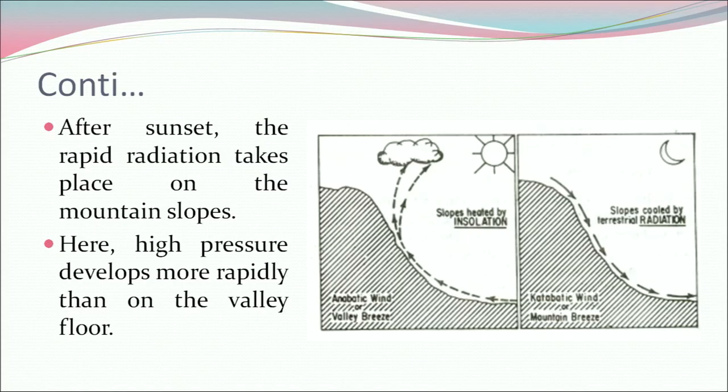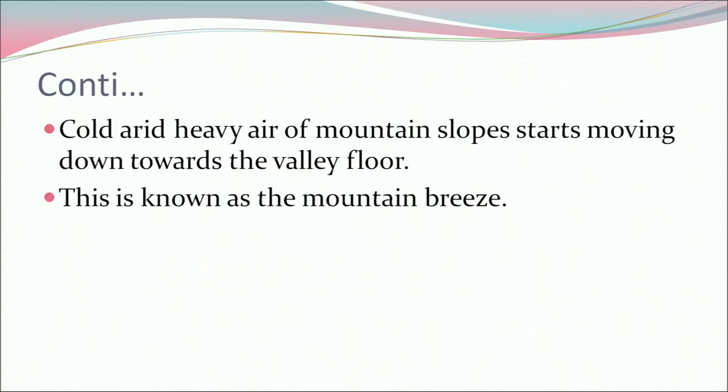After sunset, rapid radiation takes place on the mountain slopes. High pressure develops more rapidly there than on the valley floor. Cold, arid, heavy air of the mountain slopes starts moving down to the valley floor. This is known as the mountain breeze.